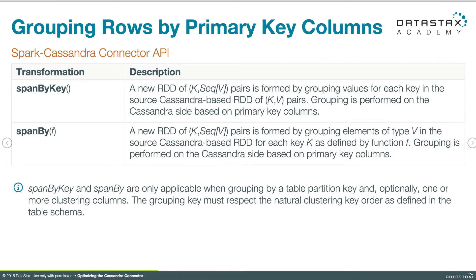We have two methods that can help us out here: span by key and span by. Span by key is a method we're going to use rather than the group by key transformation, and it's going to push that grouping to be done in Cassandra. It's going to assume that the key in the Cassandra query is the key that we want to group by. Span by is very similar, except we can pass an anonymous function into it and specify what we want the key to be.